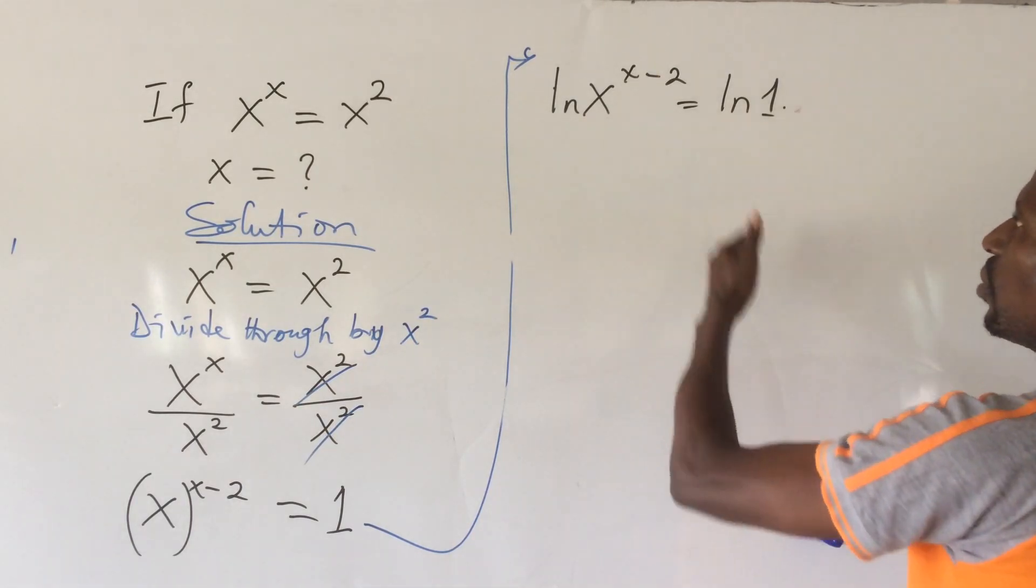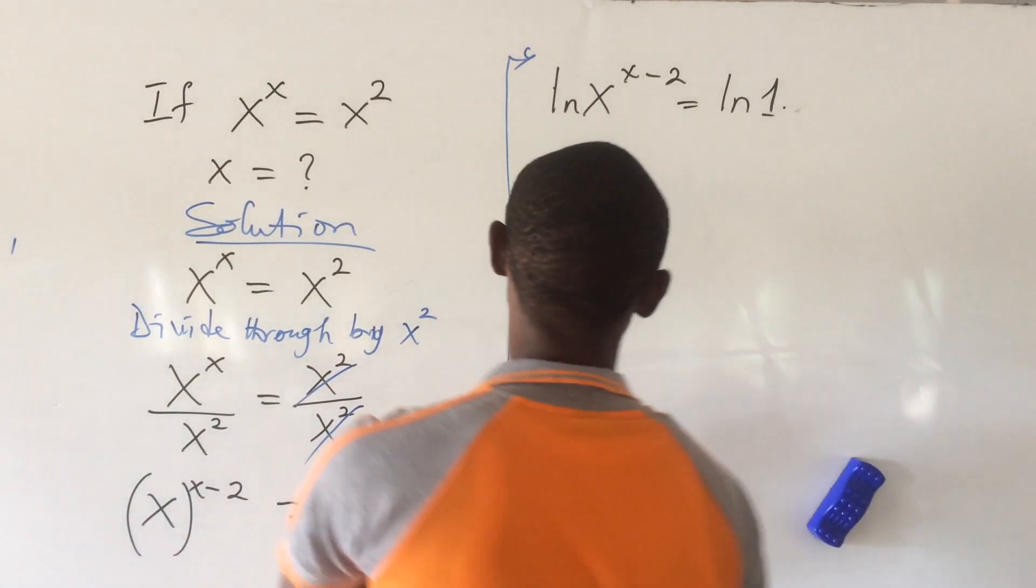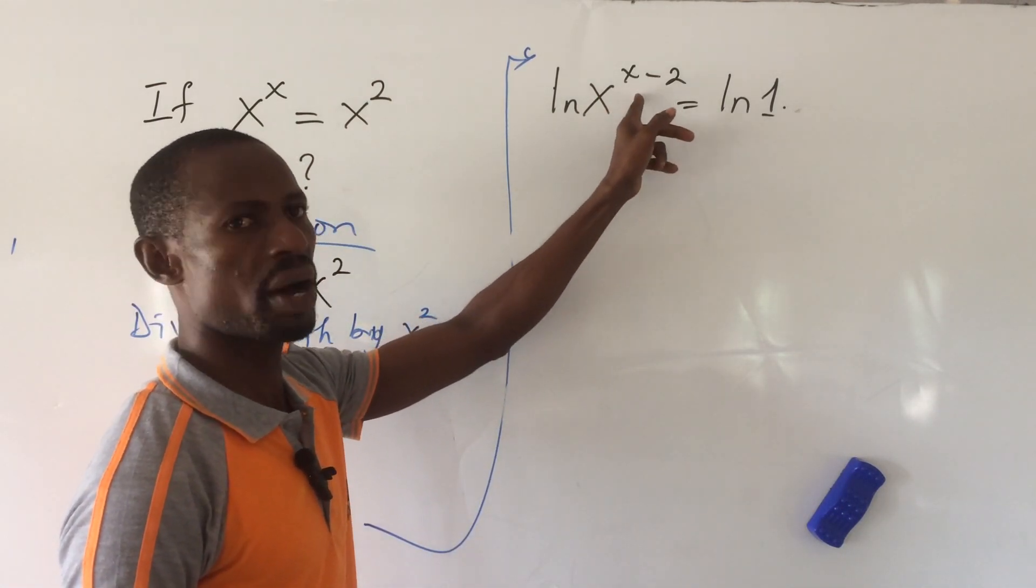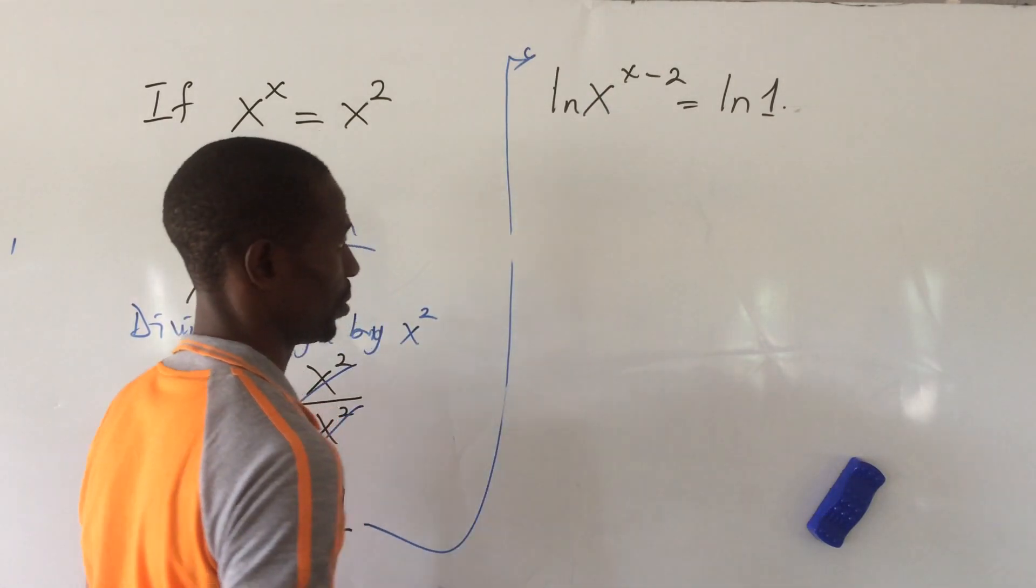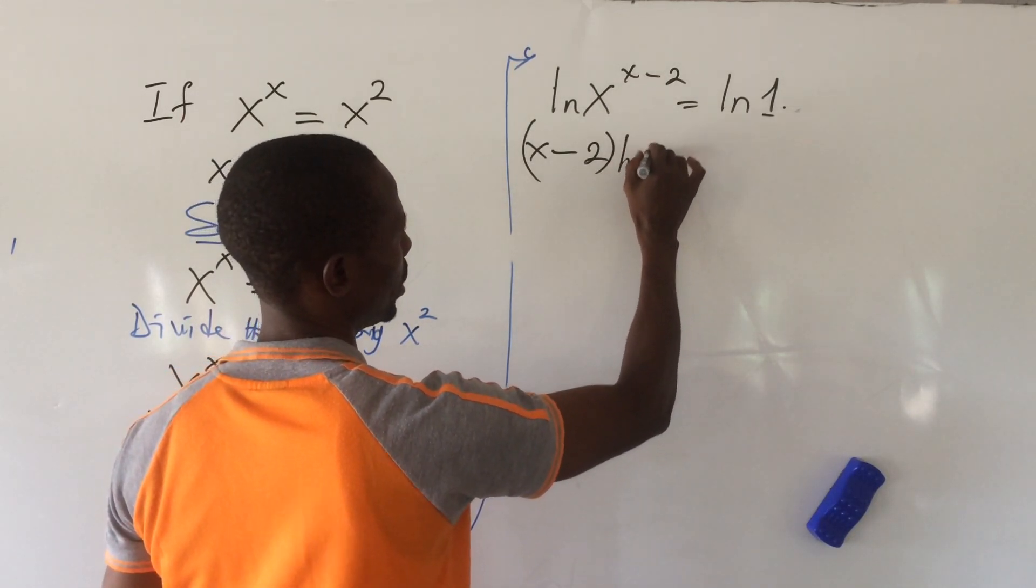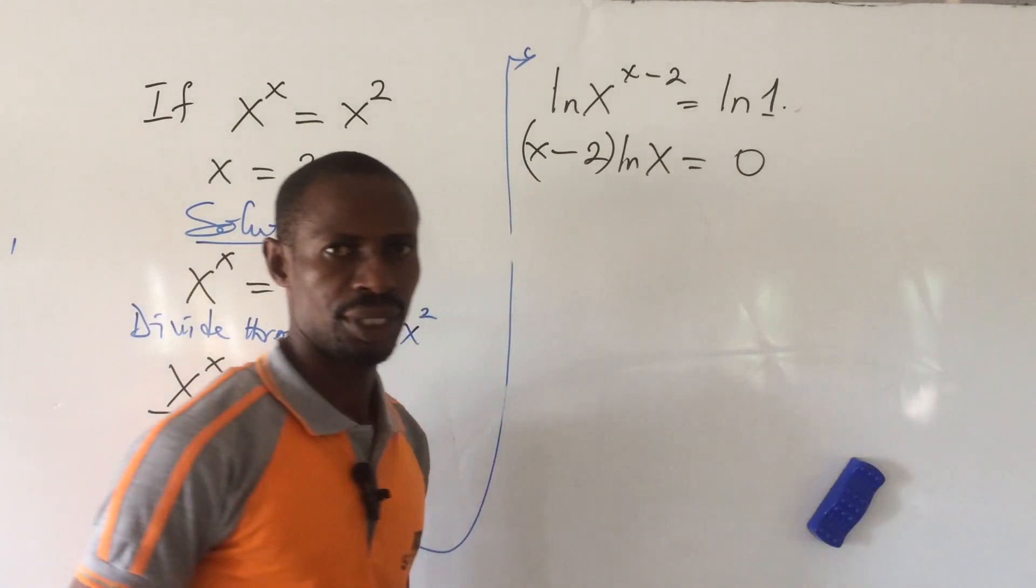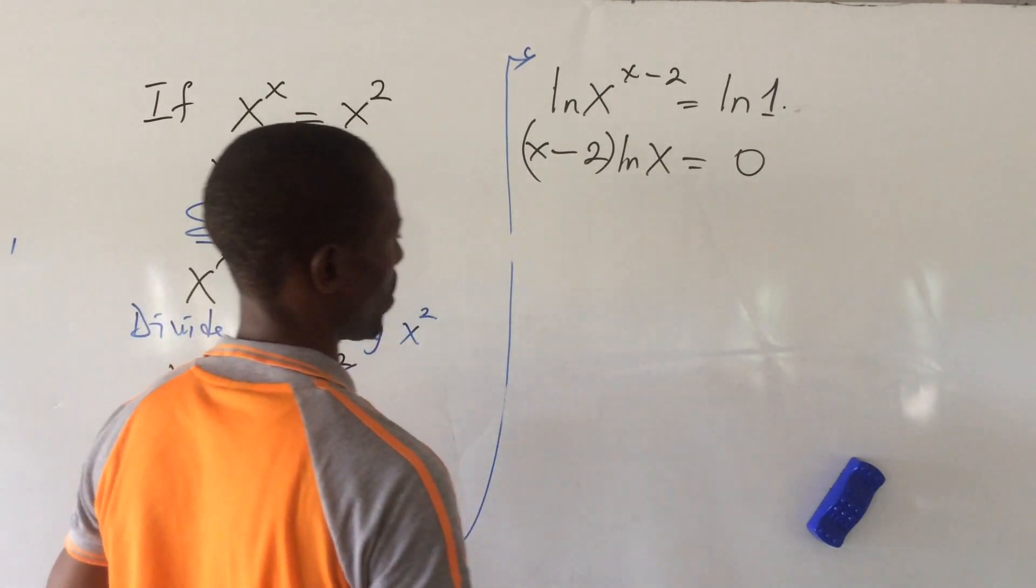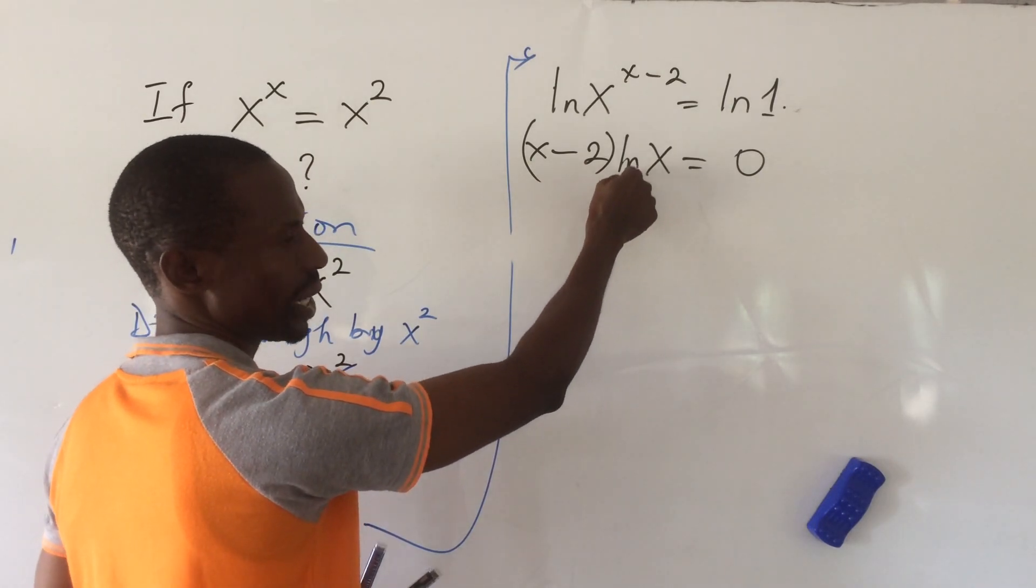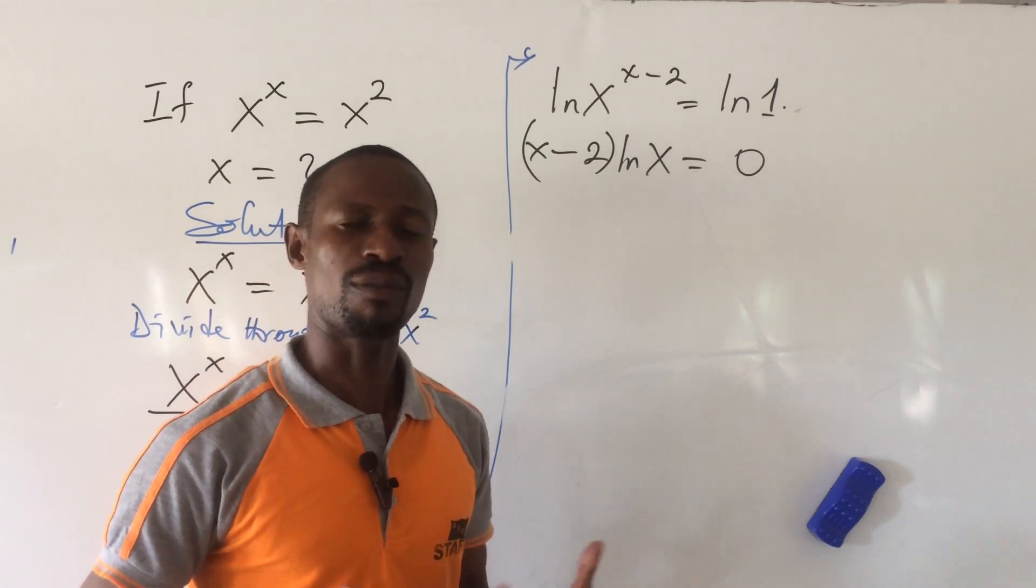Okay. So from here, where we have ln of x to the power of x minus 2 equal to ln of 1, we apply the law of logarithm, which says when you have a base number raised to a power, bring the power back. So if we do this, this will now become x minus 2 in bracket ln of x equal to ln of 1, which gives us 0. Okay. So ln of 1 is equal to 0. So from here, we can now equate this x minus 2 to 0, or equate ln of x to 0. Like we normally do in our factorization method of quadratic equation.